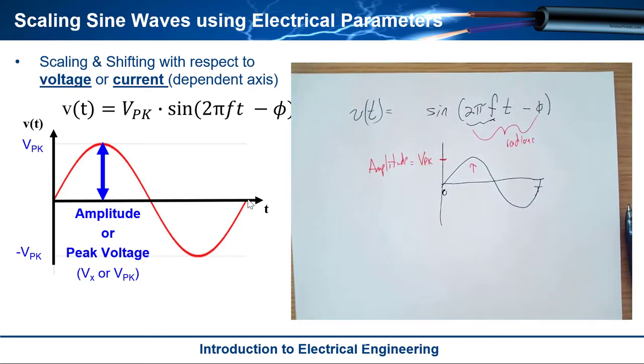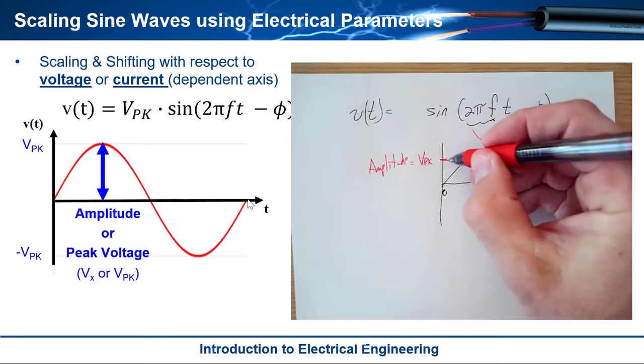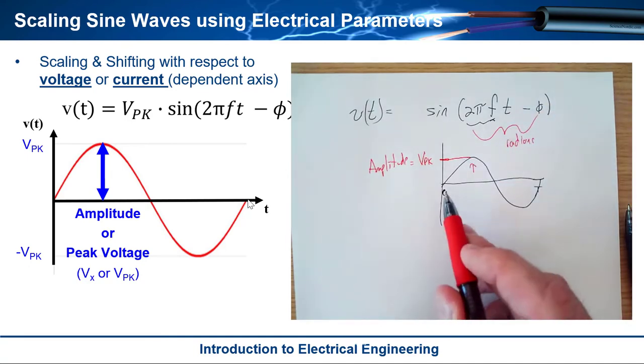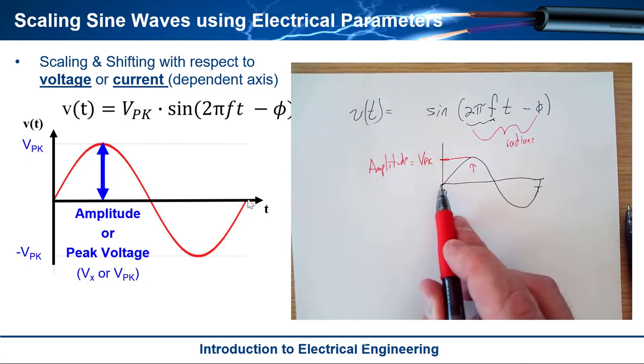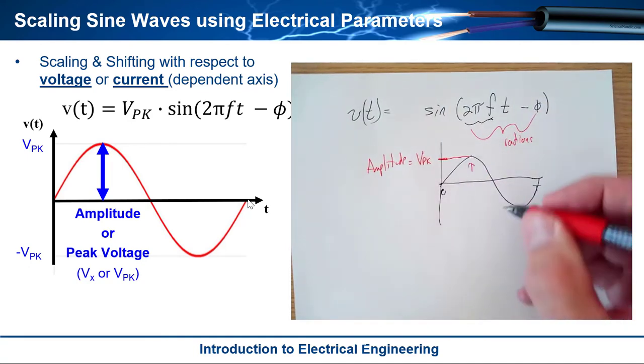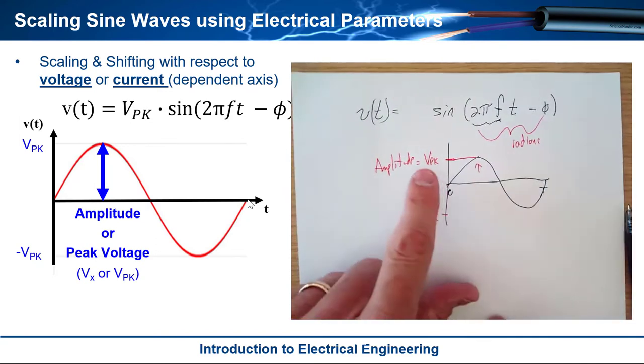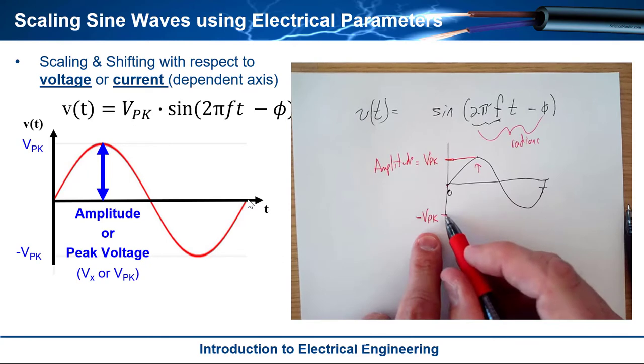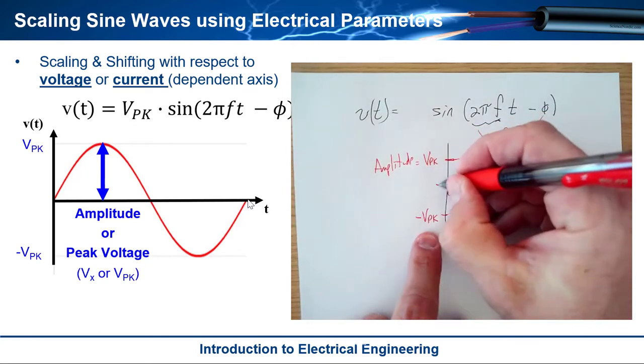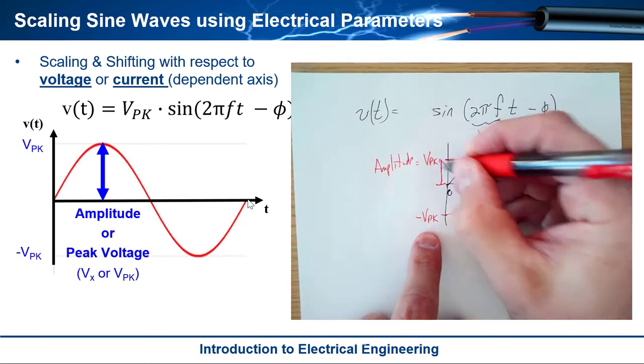And the way that this works is we define amplitude as the amount that the sine wave goes from its center point to its peak. And then it also of course goes to the negative v_pk down here. But we only use this value right here. So it's like just this right here is the peak.